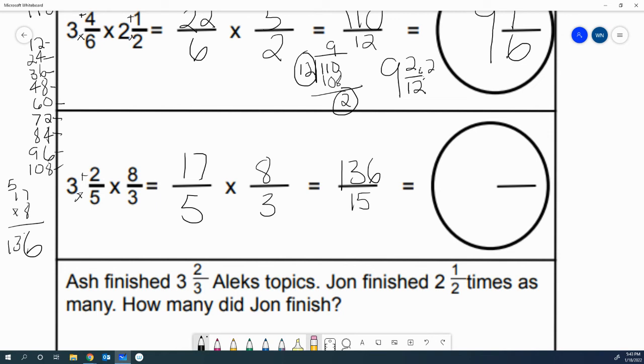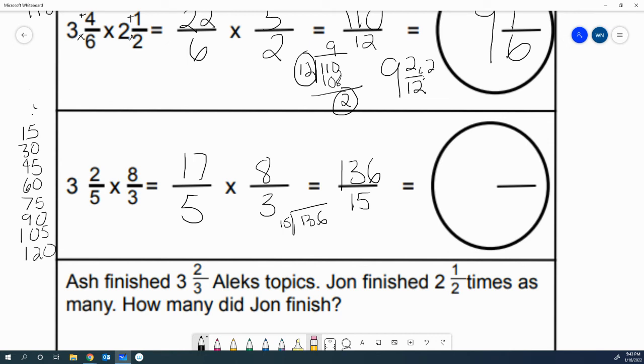Now I have some of my 15s memorized, but not all of them. So we're going to have to divide it out. 136 divided by 15. So 15. 15 times 2 is 30. Times 3 is 45. Times 4 is 60. Times 5 is 75. Then 90. Then 105. Then 120. And then 135. So that's 9. I'm going to double check myself. 9 times 5 is 45. 9 times 1 is 9, plus 4 is 13. I'm correct. So 15 can go into 136, 9 times, and that equals 135.